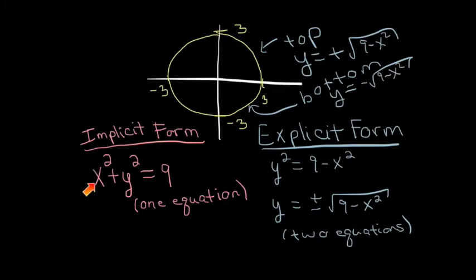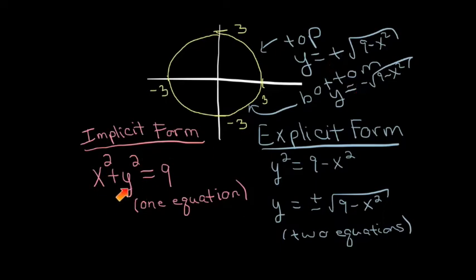The implicit form is arguably simpler because you only need one equation and don't need to worry about whether it's the positive or negative square root. Because y is squared, both are implicitly included in this single shorter format.